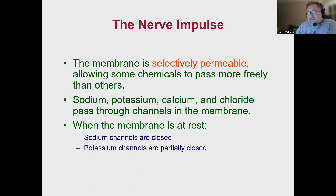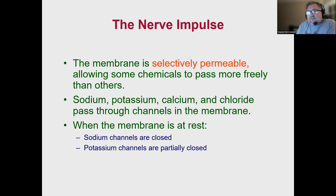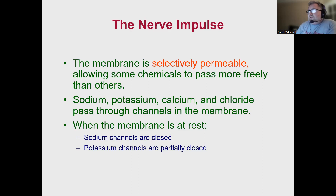Because potassium channels are open and potassium has a positive charge, it's naturally going to be drawn outside of the cell. If we want to eliminate the polarized state, one way is to pull some of those positive ions out of the neuron into the extracellular space. If we pulled enough potassium ions out, we would actually even out the distribution of charges and no longer have an electrical gradient — that would be called a depolarized state. But the neuron does not want this. It wants to maintain that polarized negative 70 millivolts.